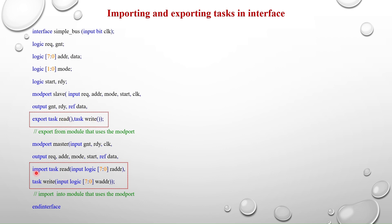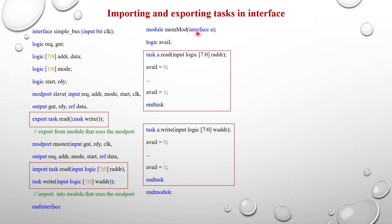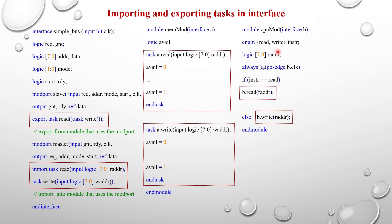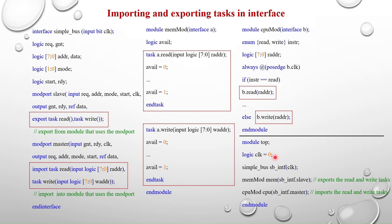Import means the module which uses the interface with master modport can import — that is, call — the read and write tasks. One important thing to note: for the export keyword you only use the identifier, just the task name like 'read' or 'write'. But for the import keyword you write the full prototype, meaning you declare the arguments. For example: 'read input logic [7:0] r_address'. So for import you use the full prototype, and for export just the identifier is enough. Here I have a memmod module with a generic interface where read and write tasks are implemented.